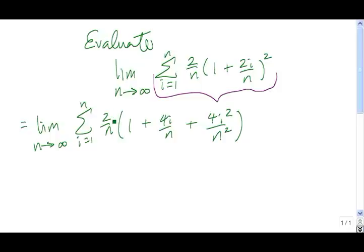Now since this 2 over n doesn't have an i in it, it's considered a constant as far as the sum goes, so we can pull it in front of the sigma notation. We can't pull it out of the limit though because it has an n in it, and the limit is sending n to infinity.